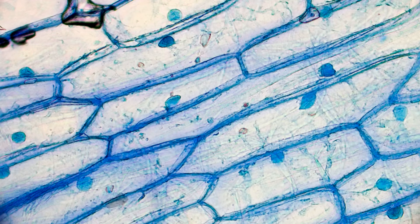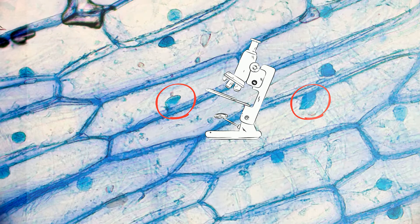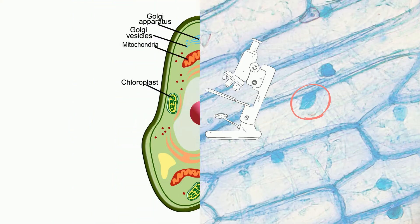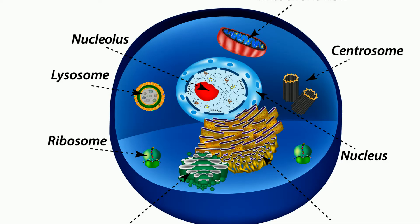See this dark spot in the cell? This is the nucleus, one of the few organelles you can see with an inexpensive microscope. Within the nucleus there is an even darker spot, called the nucleolus, and it is found in eukaryotic cells.